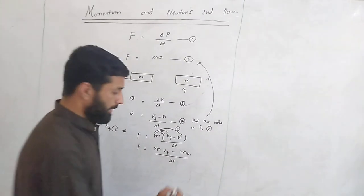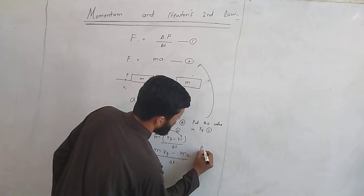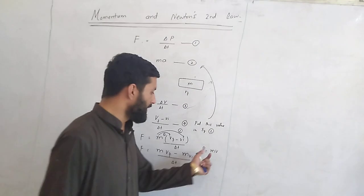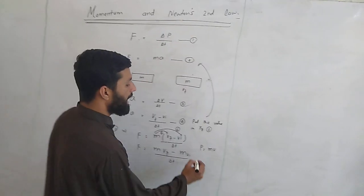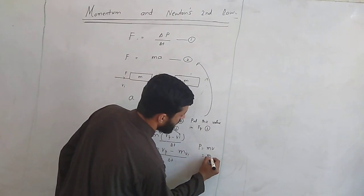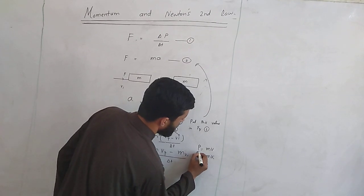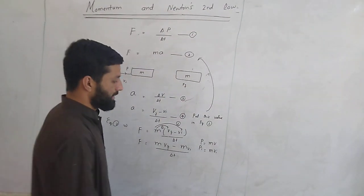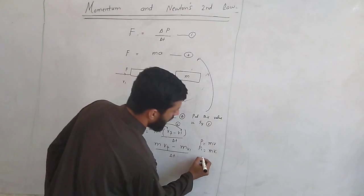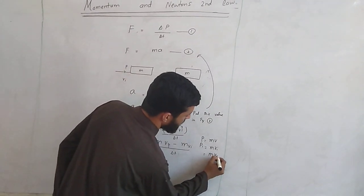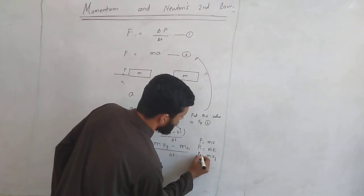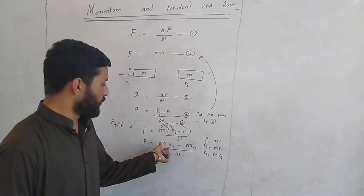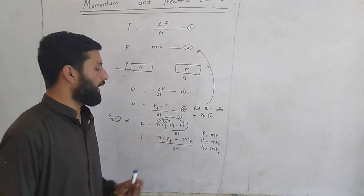As we know that momentum P is equal to M times V. This is the general equation of linear momentum. If the velocity is initial velocity, this becomes initial momentum. If the velocity is final velocity, and since the mass of the body is a constant quantity, this becomes PF. So we can replace M times VF and M times VI with PF and PI respectively.